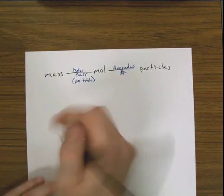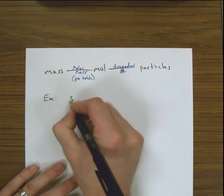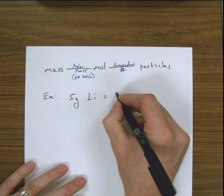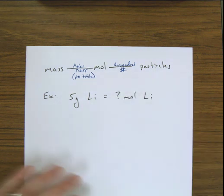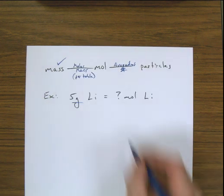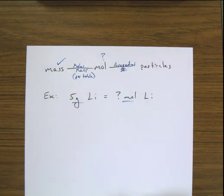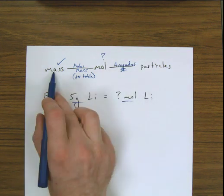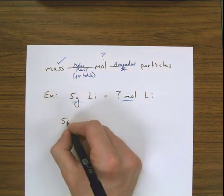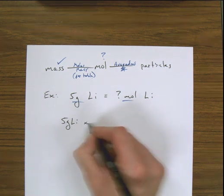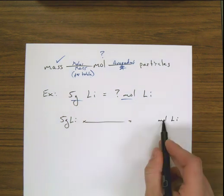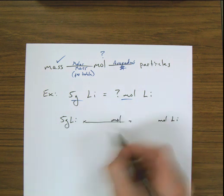Say I have 5 grams of lithium and I want to know how many moles of lithium that is. My given information states I have grams, so I'm starting at mass. The answer needs to be in moles, so I'm solving for moles. This is a one-step problem — going from mass to moles — and I only need to use information from the periodic table. I set it up as 5 grams of lithium times a fraction equals moles of lithium. What I'm going to — moles — is always on top; what I'm canceling out — grams — is on bottom.